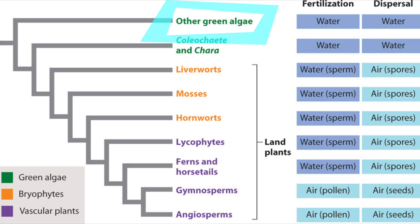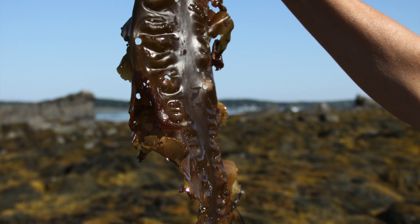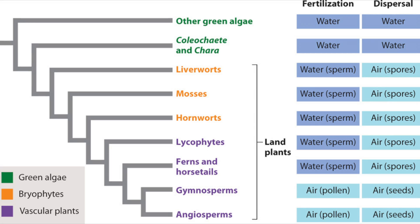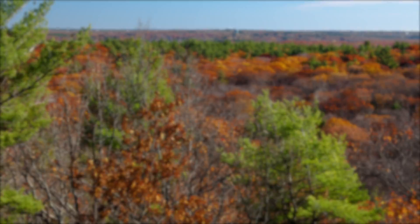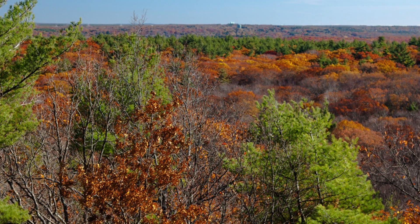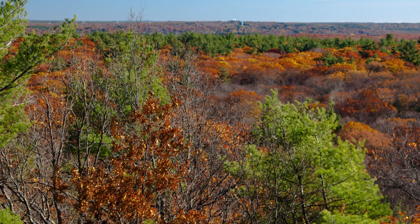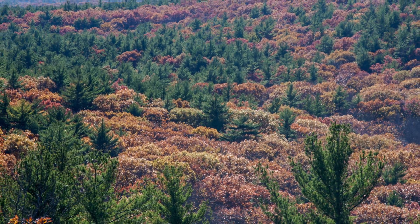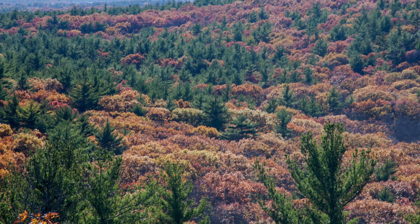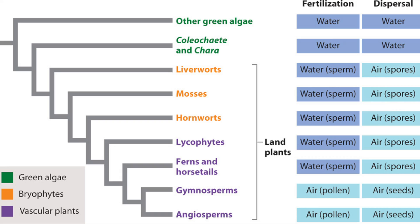Algae are aquatic, so they can use water for both fertilization and dispersal. The major groups of land plants — both angiosperms and gymnosperms — on the other hand, use air to carry their pollen for fertilization and also to carry their seeds for dispersal. Mosses, though, are an evolutionary lineage intermediate between these two groups.